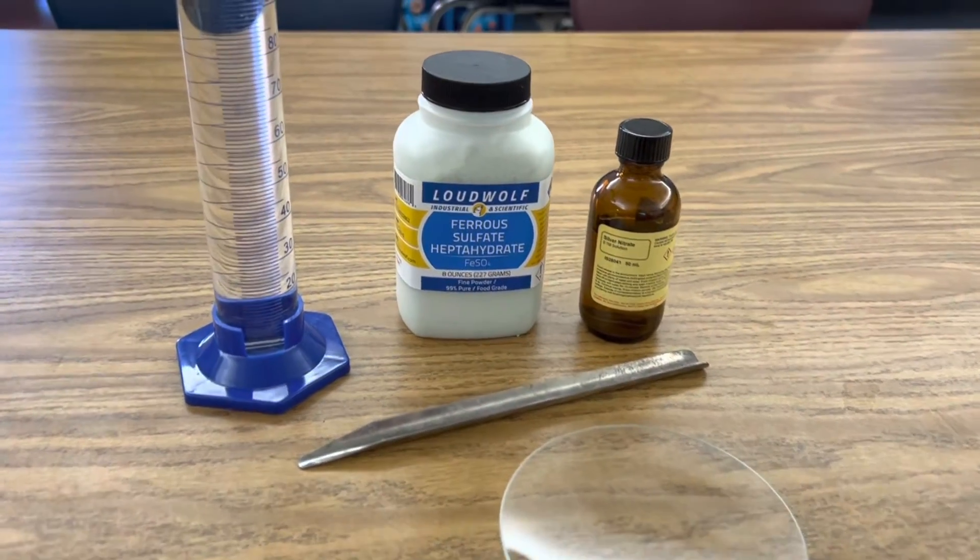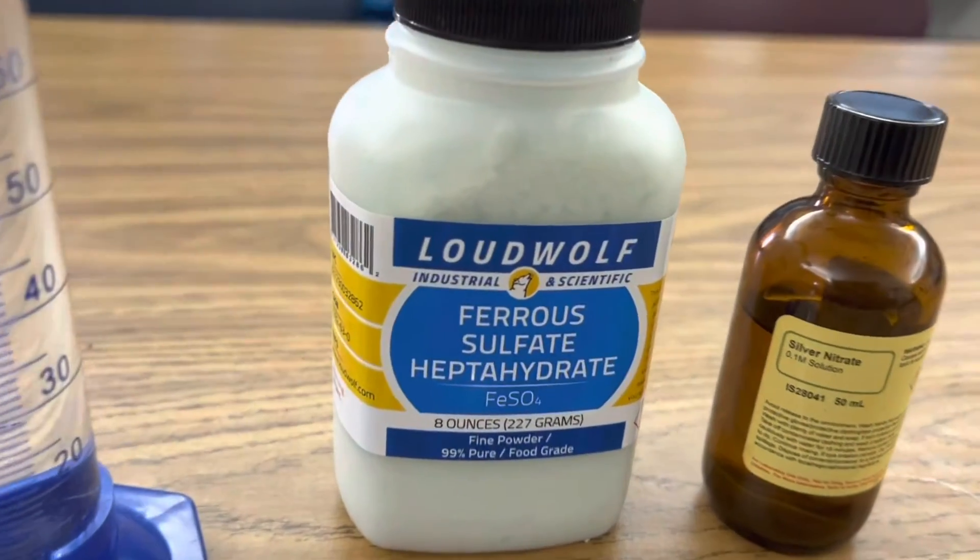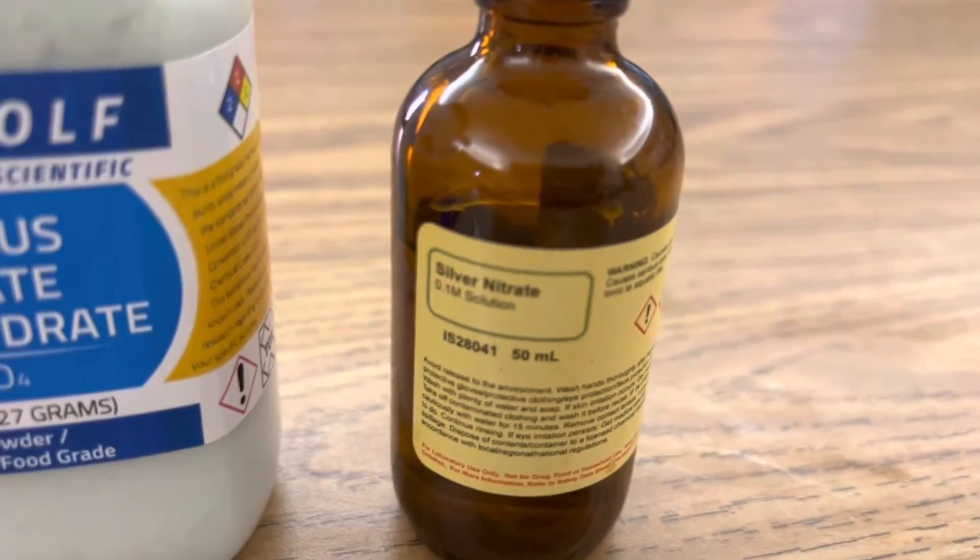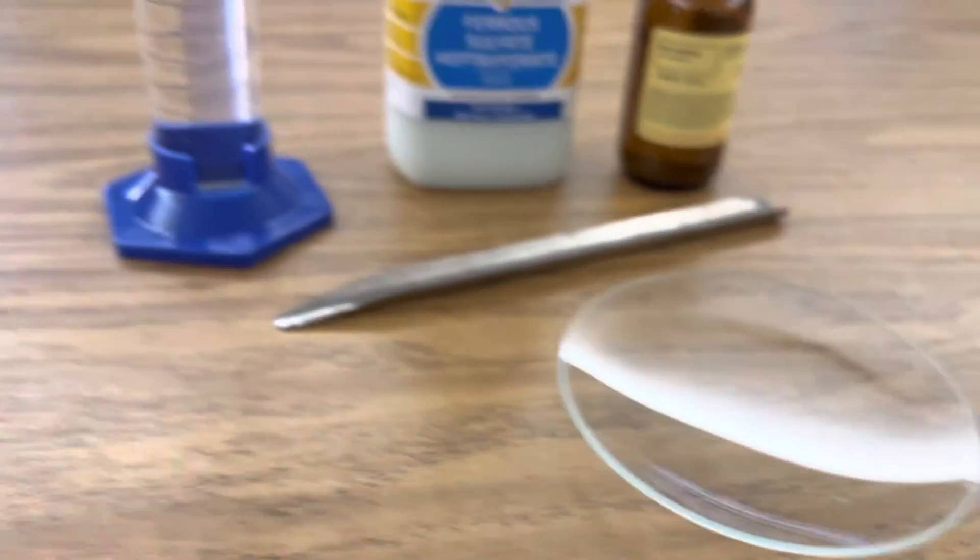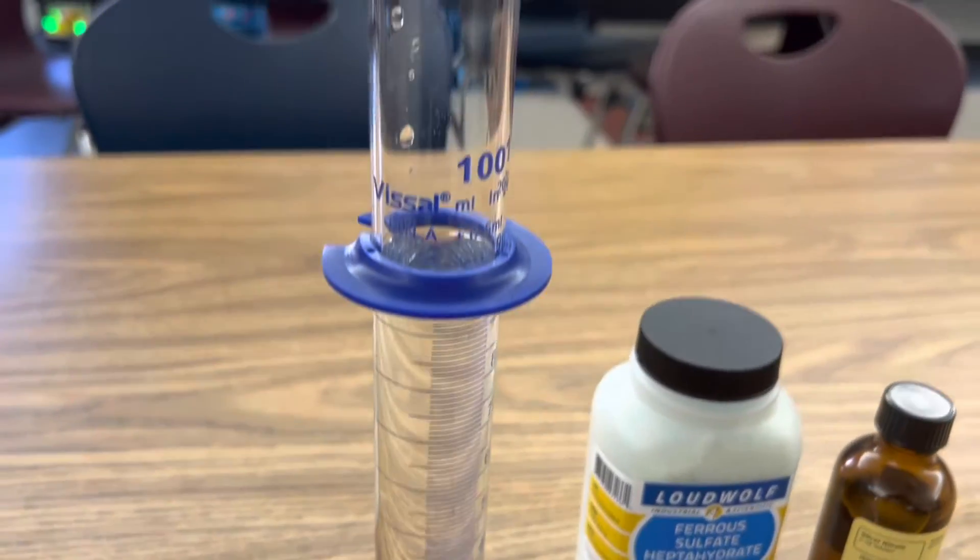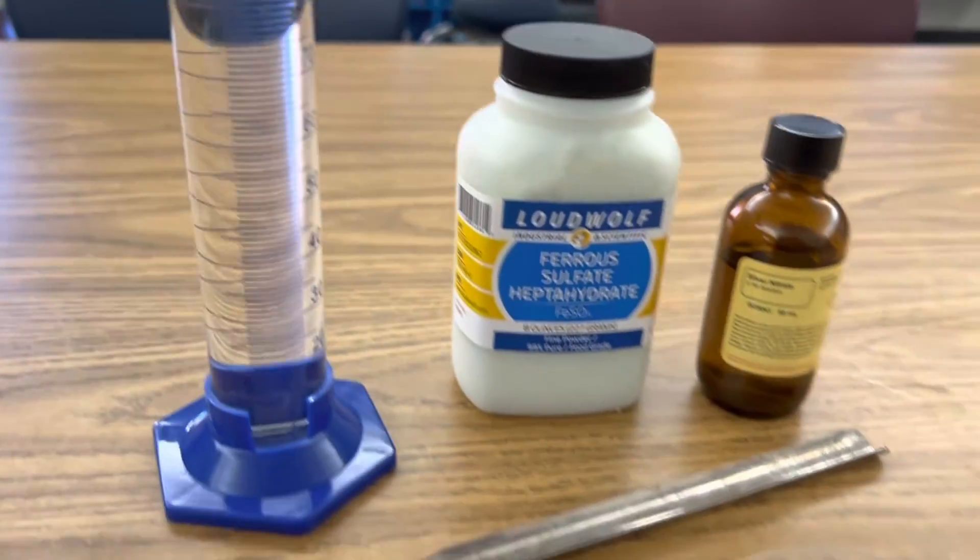All I'm using in this investigation is ferrous sulfate, also known as iron sulfate, silver nitrate, a watch glass spoon, and a hundred milliliters of distilled water in this graduated cylinder.